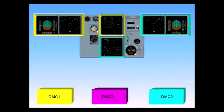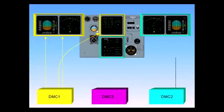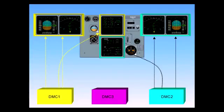Normally, DMC-1 supplies the captain's PFD, ND, and the upper ECAM screen. DMC-2 supplies the first officer's PFD, ND, and the lower ECAM screen. DMC-3 is available as a backup.